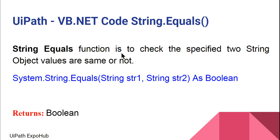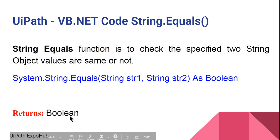The String.Equals function is used to check whether two specified string object values are the same or not. This is the syntax, and as I'll show you in the demo, String.Equals returns a boolean value. So let's get started and see the demo.